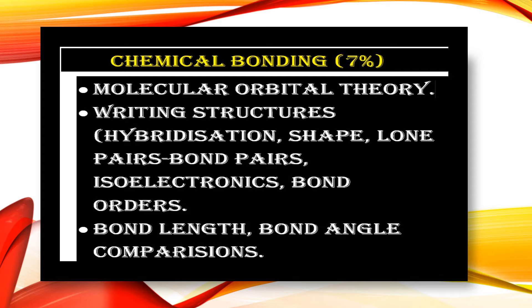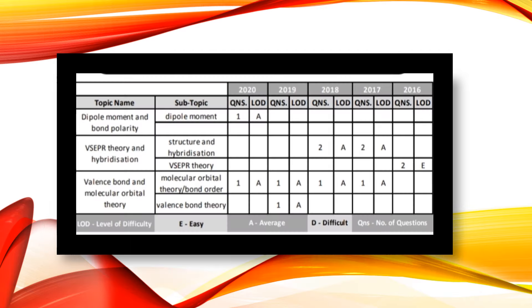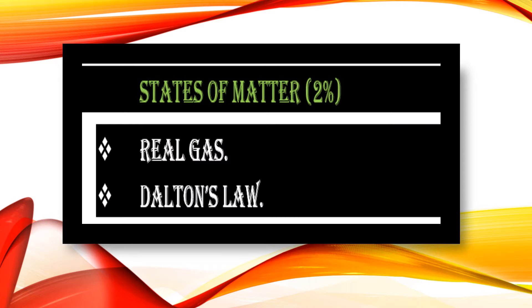Chemical Bonding holds 7% weightage. The most important subtopics are molecular orbital theory, hybridization, shape, lone pair-bond pair interactions, isoelectronics, bond orders, bond lengths, and bond angle comparisons — for example, NH₃ vs NF₃. These are easy to remember and easy to score marks on. In 2020, questions on dipole moment and bond polarity were asked at average difficulty, and MOT questions appeared in both 2019 and 2020.